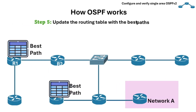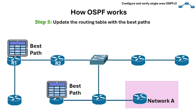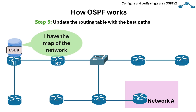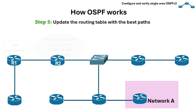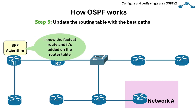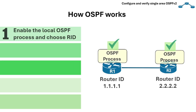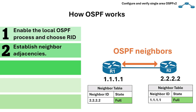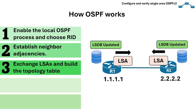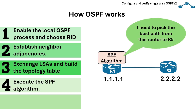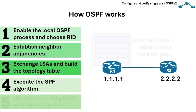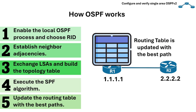Then comes the last step: updating the routing table with the best paths. In short, the LSDB gives routers the map, but the SPF algorithm figures out the fastest routes from each router's perspective and puts those into the routing table. To review how OSPF works: first, enable the local routing process and choose the router ID; next, establish neighbor adjacencies; then exchange LSAs and build the topology table or LSDB; after that, execute the SPF algorithm; and last, update the routing table with the best paths.